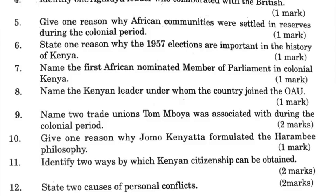Question 11: Identify ways by which Kenyan citizenship can be obtained — by birth, by descent, by registration, by naturalization.